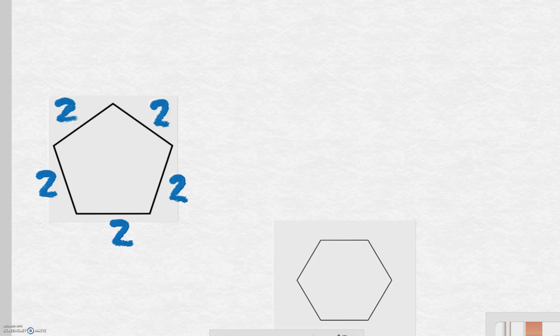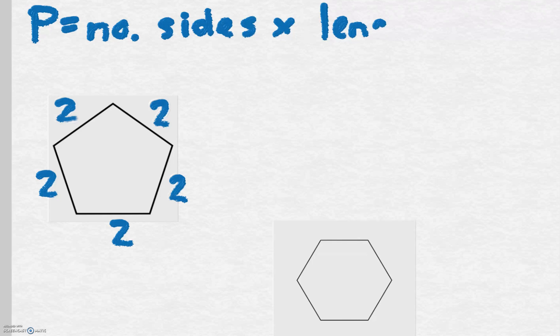To find the perimeter of a regular polygon, P equals the number of sides multiplied by the length of one of those sides.